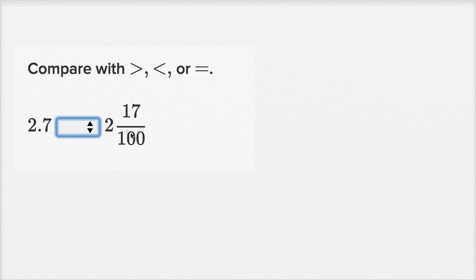We're asked to compare two numbers. I took a picture from the Khan Academy exercise, so I can't click on this, but if you did click on it in the exercise, you would get to choose between one of three options. So we're going to compare 2.7 to 2 and 17 hundredths.